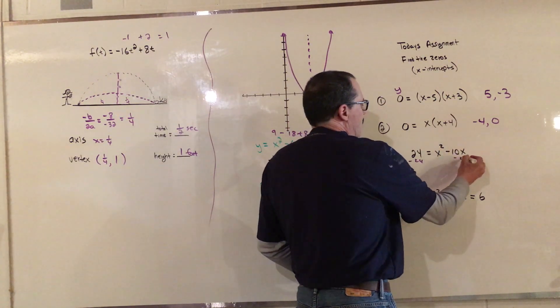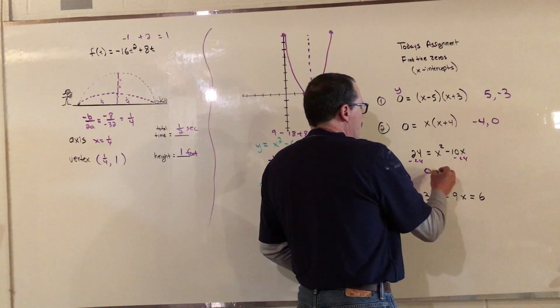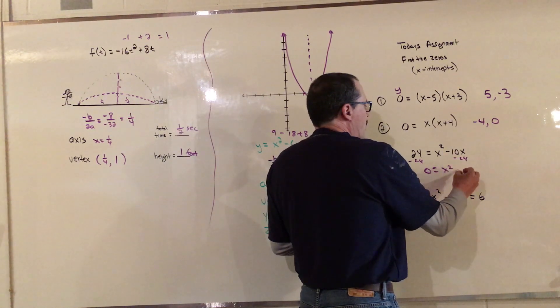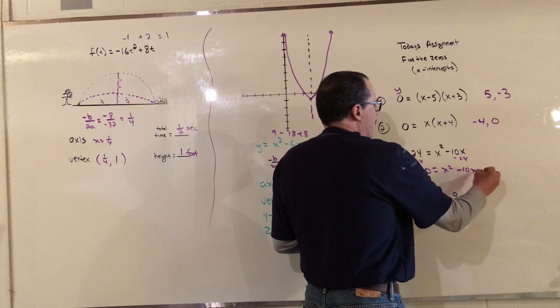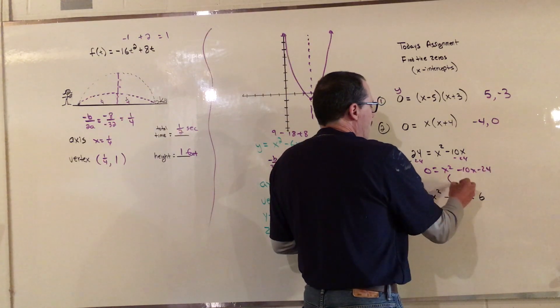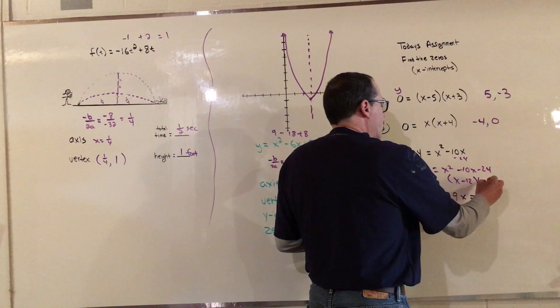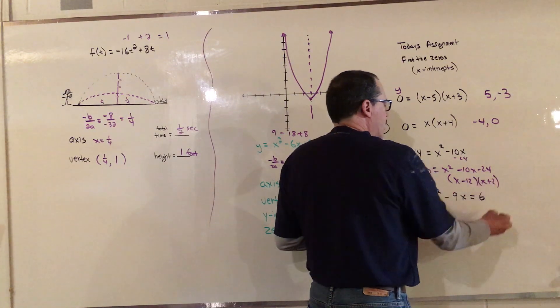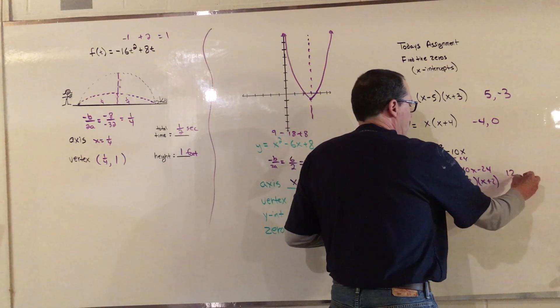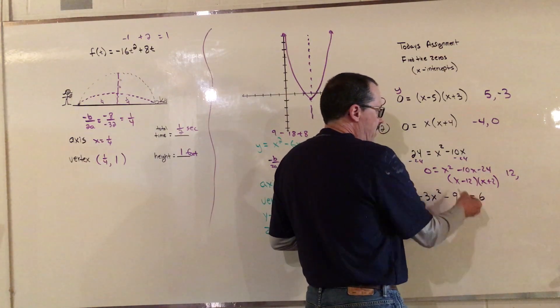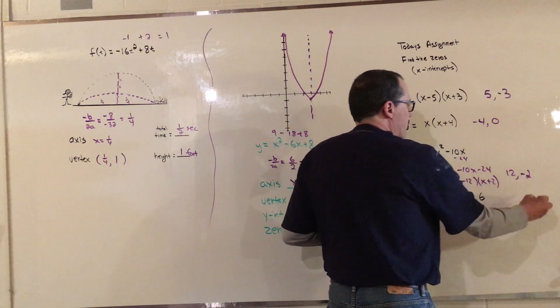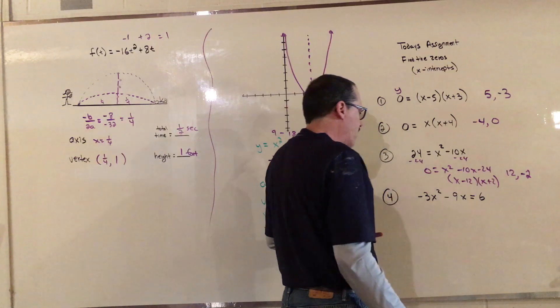Then I'm going to factor that into x minus 12 and x plus 2. So my x-intercepts or my zeros are 12, because that makes that 0, and for this one it would be negative 2.